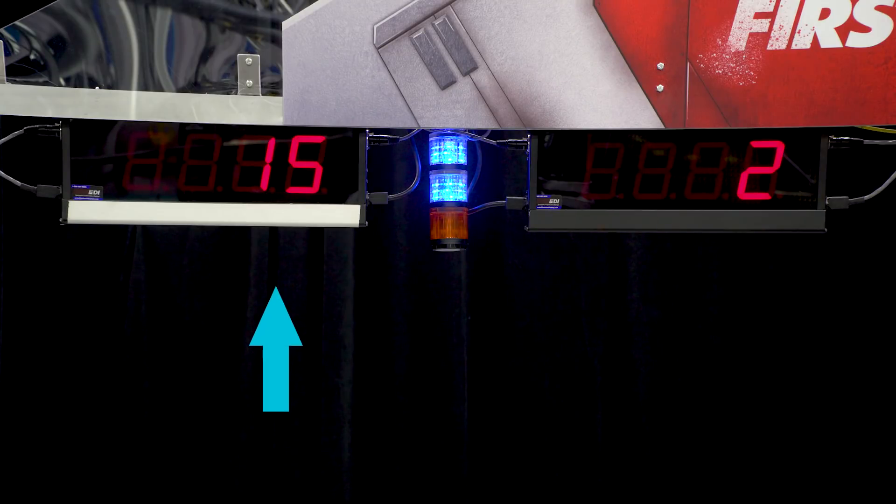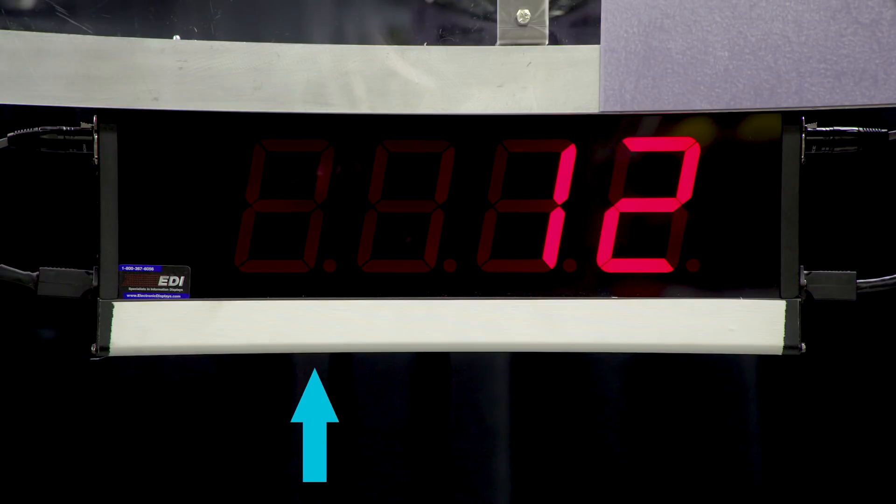The official time remaining in the match is displayed on the sign hung in player station 2. It is marked with white tape along the bottom edge.